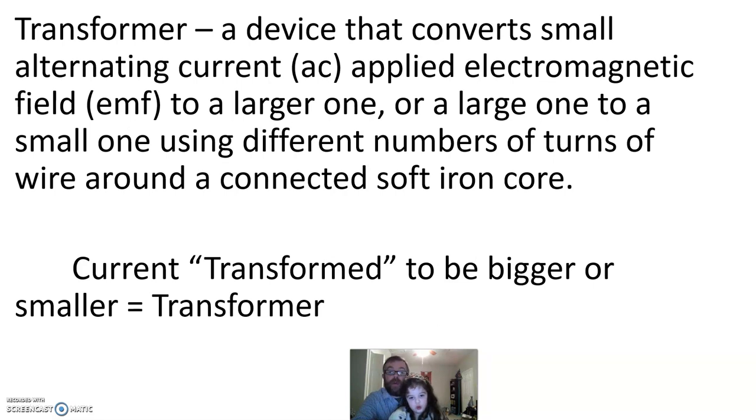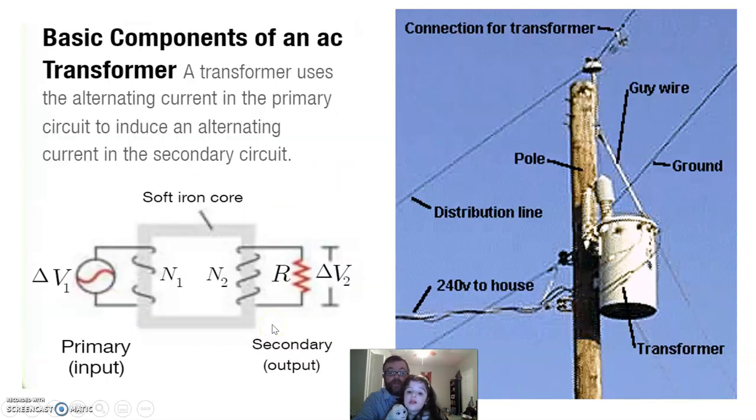Last thing to talk about today, a transformer. A transformer is a device that converts a small alternating current (AC) applied electromagnetic field (EMF) to a larger one, or a large one to a small one, using different numbers of turns of wire around a connected soft iron core. So, electrical current is being transformed to be bigger or smaller. That's what a transformer does.